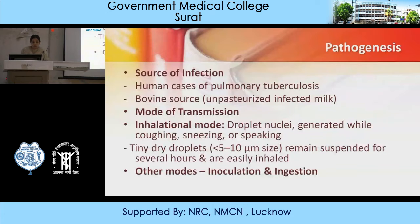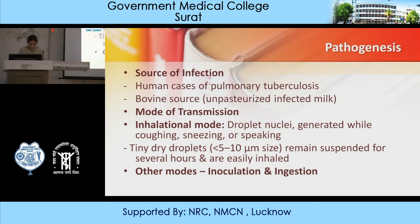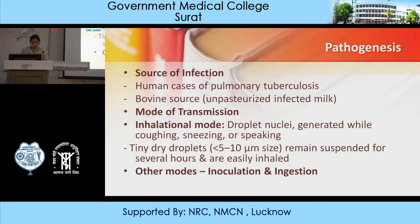In pathogenesis, the source of infection is of two types: human cases and bovine source. Human cases involve pulmonary tuberculosis, and bovine source involves unpasteurized infected milk. Mode of transmission: one is inhalation — droplet nuclei generated while coughing, sneezing, or speaking; approximately 3,000 droplets can be infected during coughing. Tiny dry droplets less than 5 to 10 micrometers remain suspended for several hours and are easily inhaled into the respiratory system. Other modes include inoculation through the skin and ingestion, which is the bovine type of M. tuberculosis.